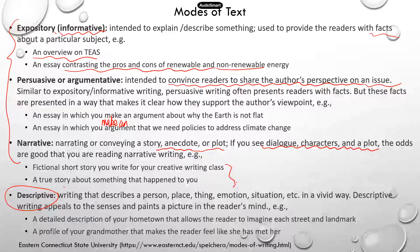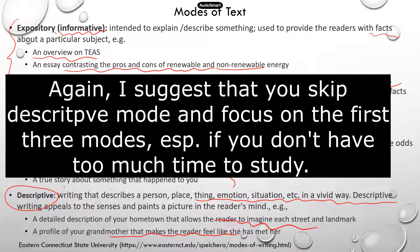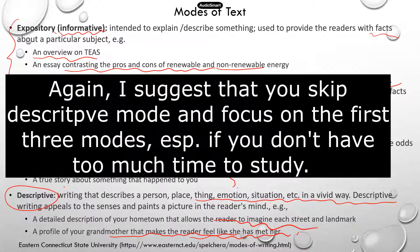Now, descriptive. This is a piece of writing that describes a person, a place, a thing, an emotion, or a situation in a very vivid way. Examples include a detailed description of your hometown that allows the reader to imagine what each street or landmark looks like, or a profile of your grandmother that makes readers feel they have met her. The TEAS study manual is not very clear about descriptive writing and there aren't good examples in the manual, so we'll focus on the first three types of writing, which are most likely to appear on TEAS.